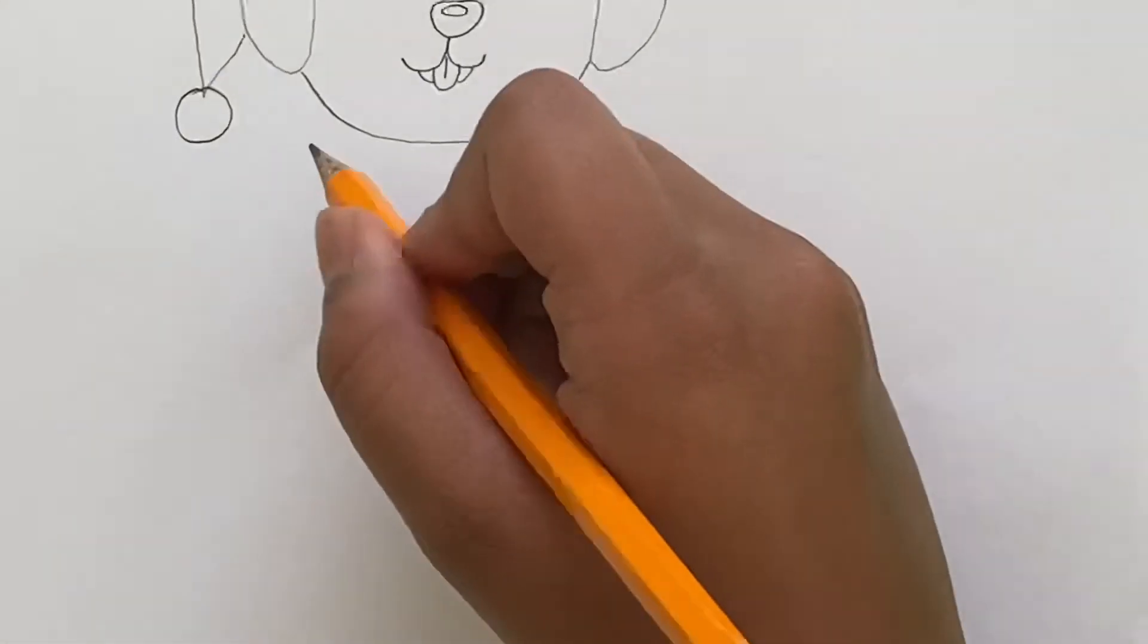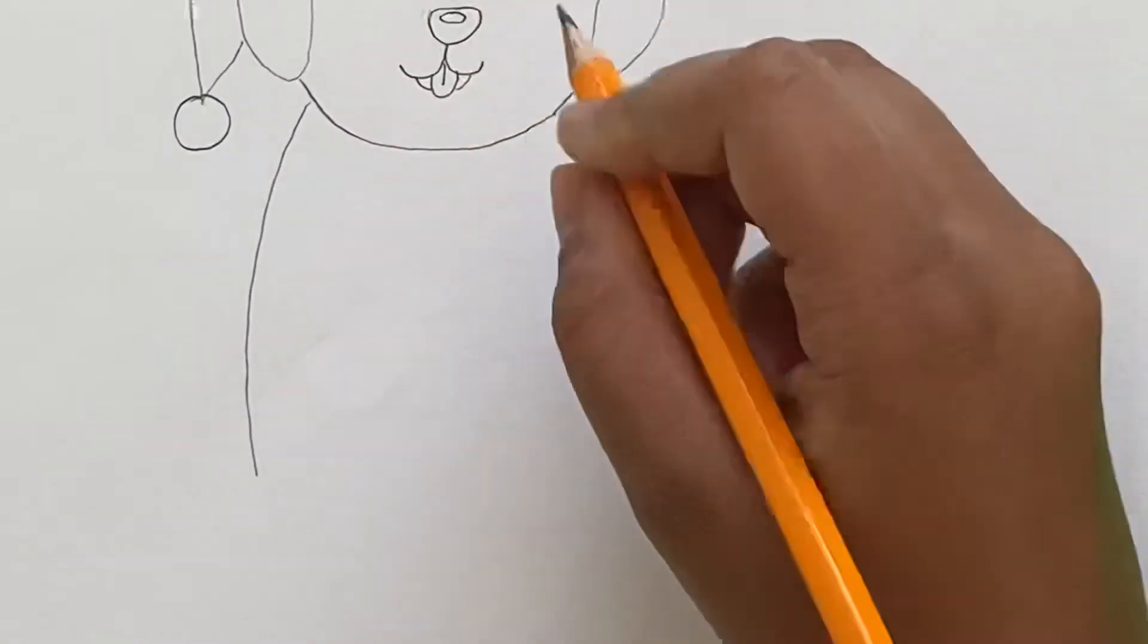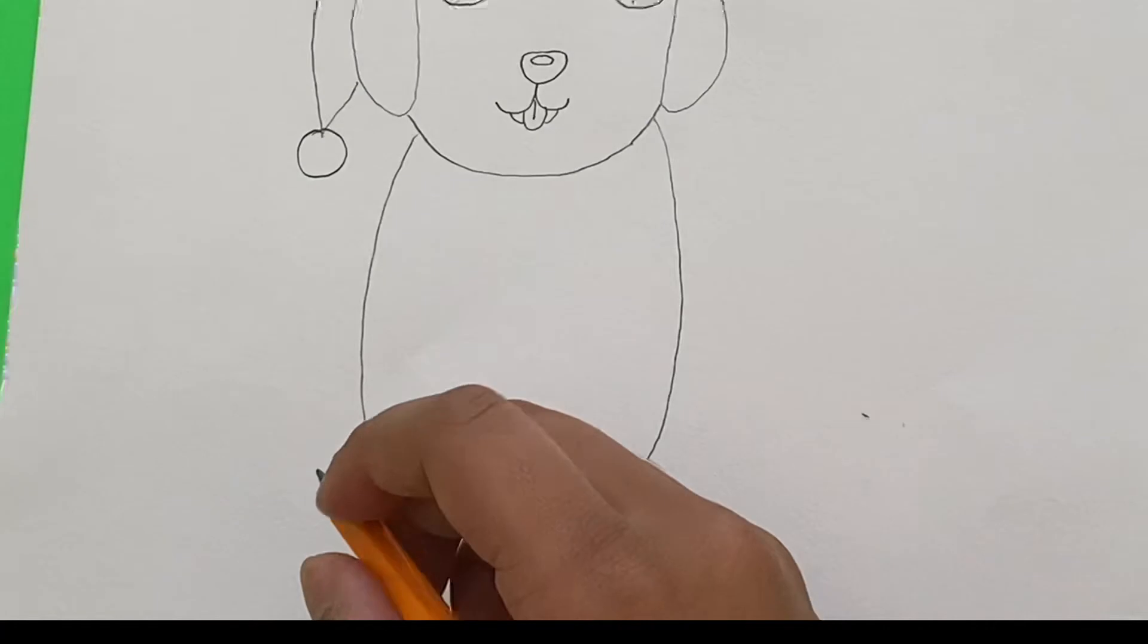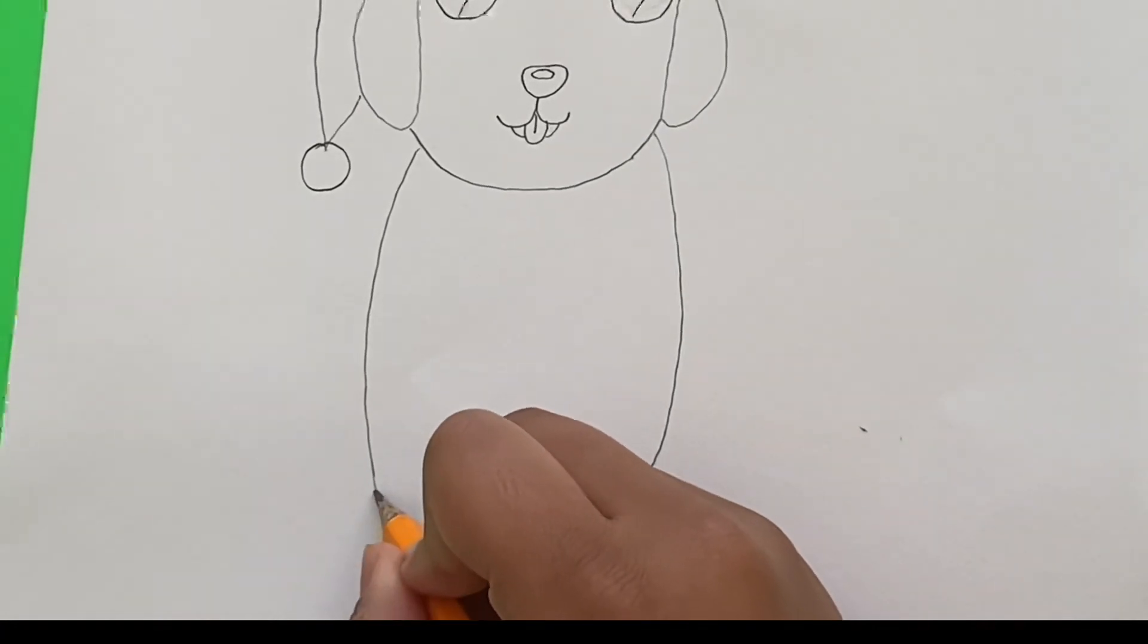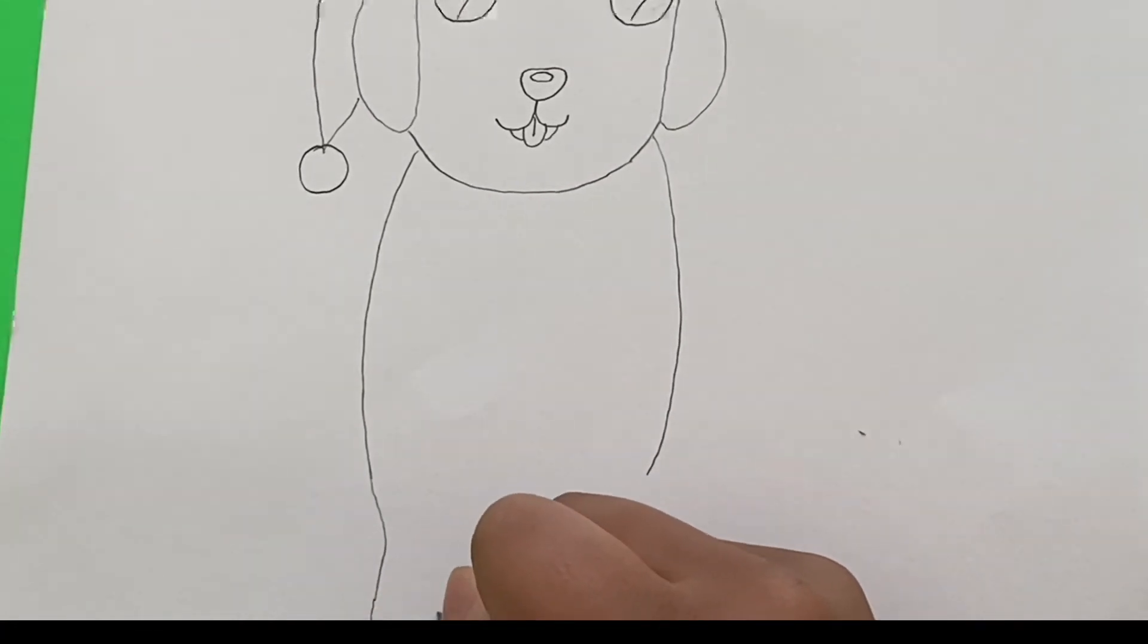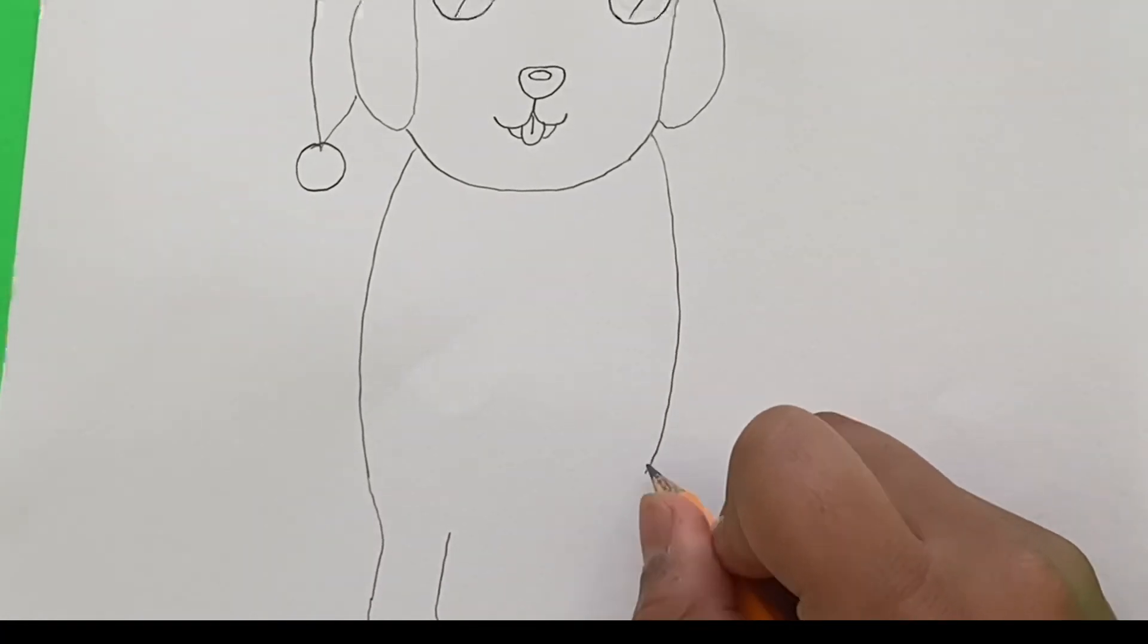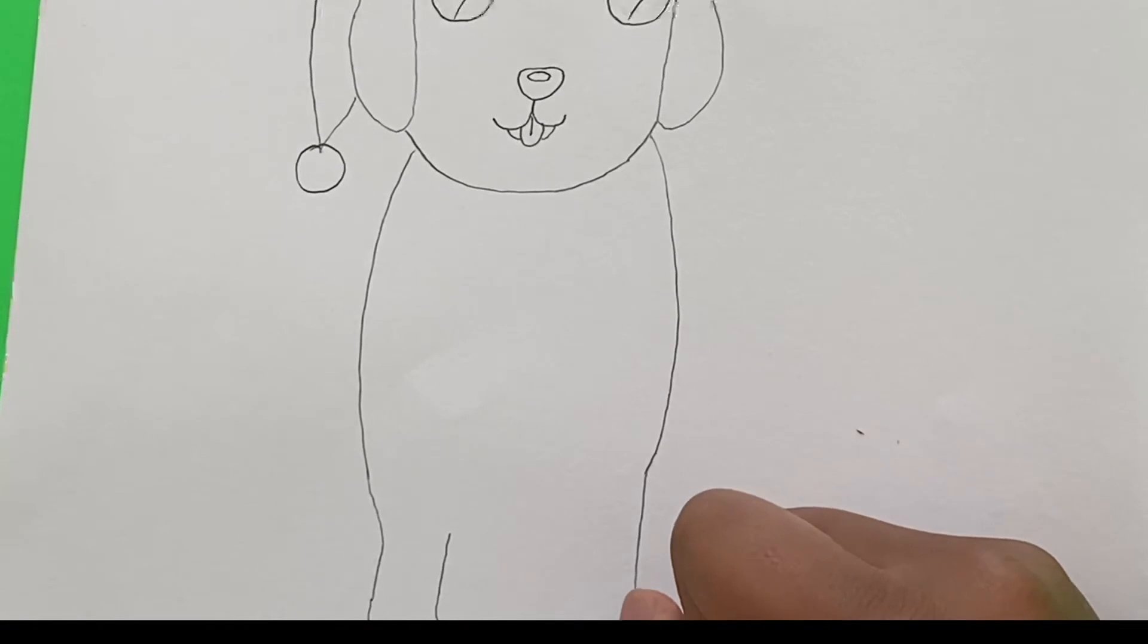Now we're going to move on to the body. So we're just going to draw two curved lines that come from the side. Really simple. And now we're going to draw some little feet, or paws. We're going to do it just like this.